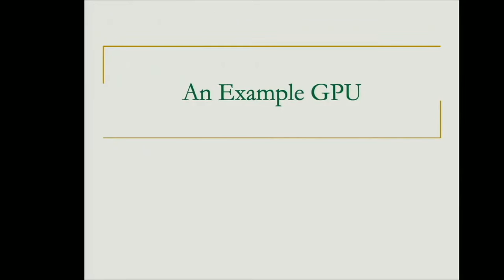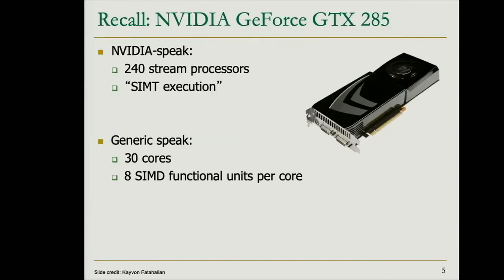The trend of general-purpose GPU programming started around 12–13 years ago. The very first architecture was called the Tesla architecture. This is one of the first GPUs capable of general-purpose processing. In NVIDIA's terminology, it has 240 stream processors, and this uses SIMT execution.